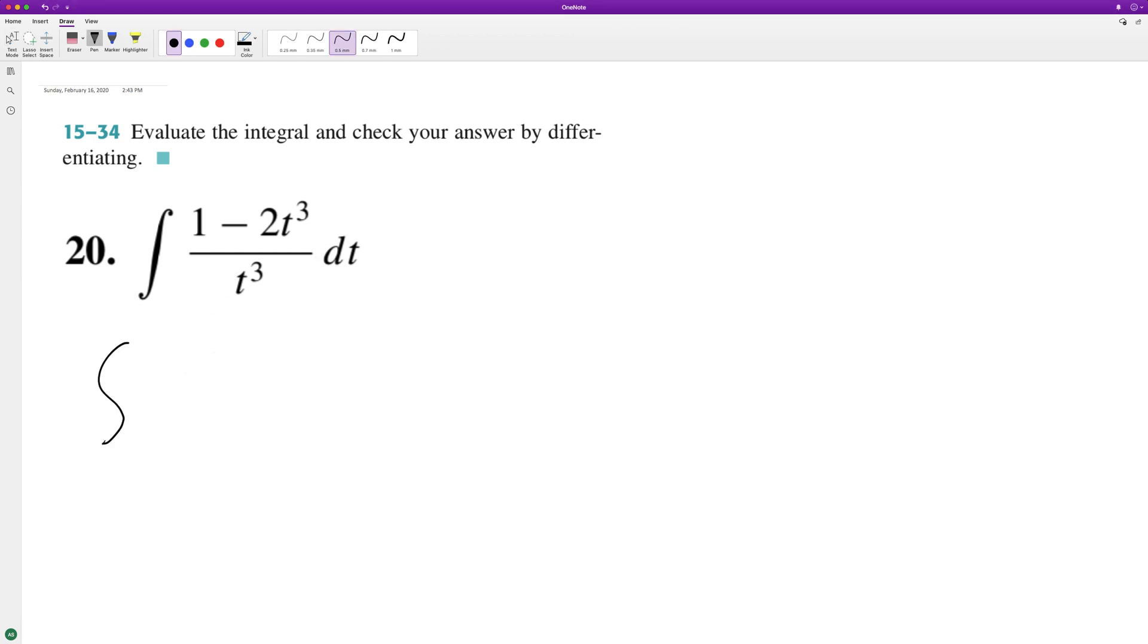raised to the third. So this is the same thing as 1 over t cubed or t raised to negative 3, minus, and then 2t cubed divided by t cubed is actually just minus 2. So that's kind of nice.